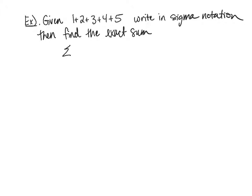First let's write this in sigma notation: the first term is 1, the second is 2, so each term is just i, starting from i equals 1 and going to 5. What's a quick way to add these up? I could do it in my head — 5 plus 4 plus 3 plus 2 plus 1 — but what if I asked you to add the first 100, 200, or 1000 terms? You don't want to do all that, so let me show you a cool pattern. Let's look at it geometrically first.